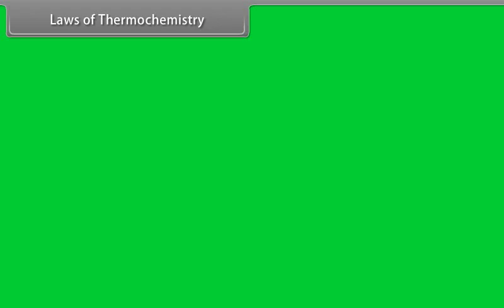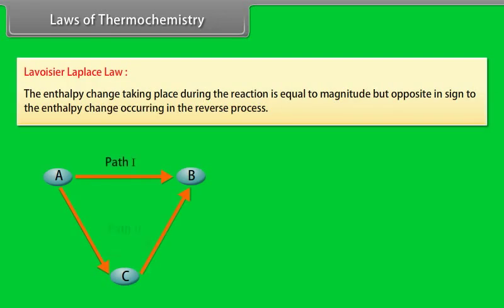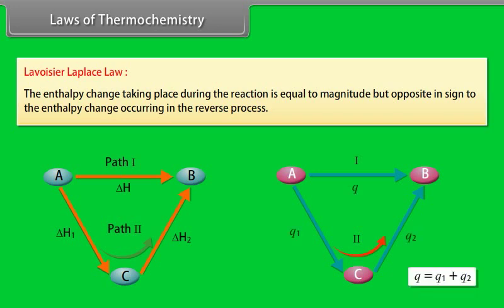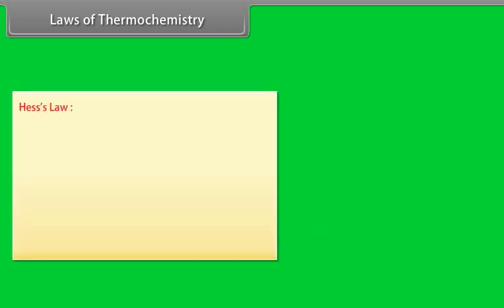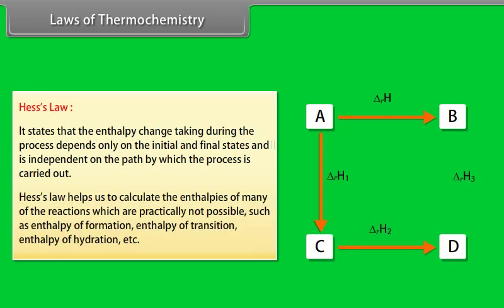Laws of Thermochemistry: Lavoisier-Laplace Law states that the enthalpy change during a reaction is equal in magnitude but opposite in sign to the enthalpy change of the reverse process. Hess's Law states that the enthalpy change during a process depends only on the initial and final states, and is independent of the path by which the process is carried out. Hess's Law helps calculate enthalpies of reactions that are practically not possible, such as enthalpy of formation, enthalpy of transition, enthalpy of hydration, etc.